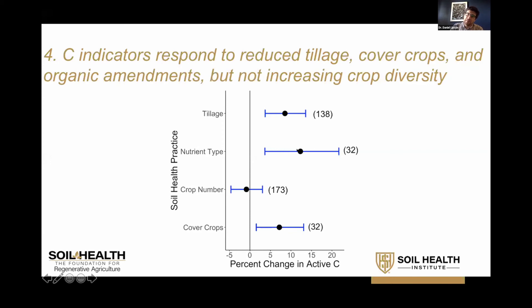A value of zero means the soil health practice didn't increase active carbon. For both decreased tillage and cover crops, adopting those practices increased active carbon by just under 10%. A slightly stronger response was seen for nutrient type — a little over 10%. There was essentially no change in active carbon from increasing the diversity of the rotation.